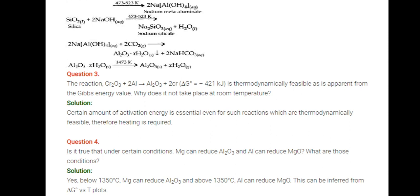Is it true that under certain conditions magnesium can reduce Al2O3 and aluminum can reduce magnesium oxide? What are these conditions? Yes, below 1350 degrees Celsius magnesium can reduce Al2O3, and above 1350 degrees Celsius aluminum can reduce magnesium oxide. This can be inferred from delta G° versus T plots.